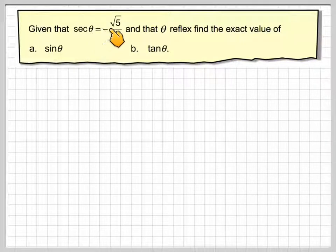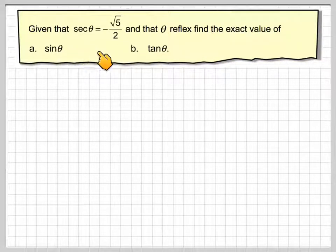Given that sec θ is minus root 5 over 2 and that θ is reflex, find the exact value of sine θ and tan θ.